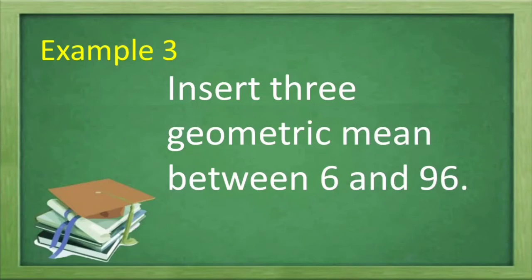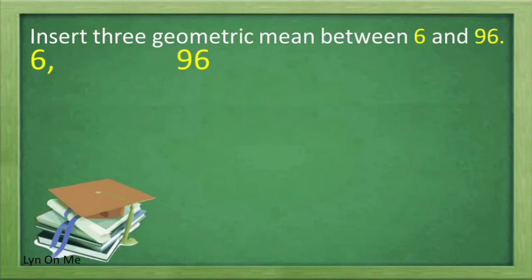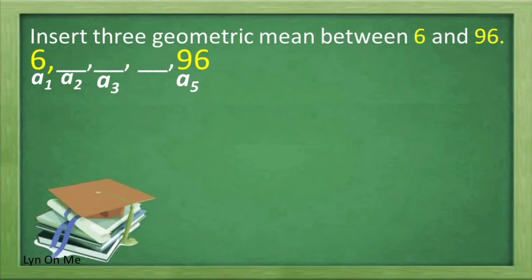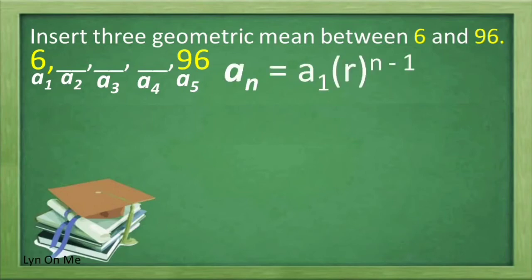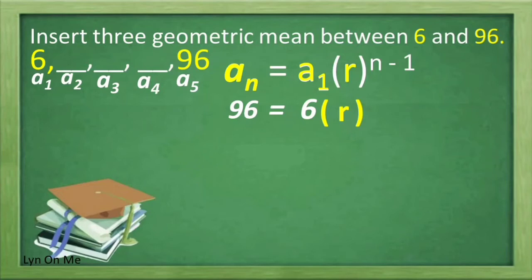Example 3: insert 3 geometric means between 6 and 96. Given these two numbers, we're going to insert 3 terms which are the geometric means between 6 and 96. In this sequence, 6 is our first term and 96 is our last term, or a sub 5. So we're going to look for a sub 2, a sub 3, and a sub 4. We use the formula a sub n equals a sub 1 multiplied by r raised to n minus 1. The value of a sub n is 96, a sub 1 is 6, and n is 5, so the exponent becomes 5 minus 1 equals 4.